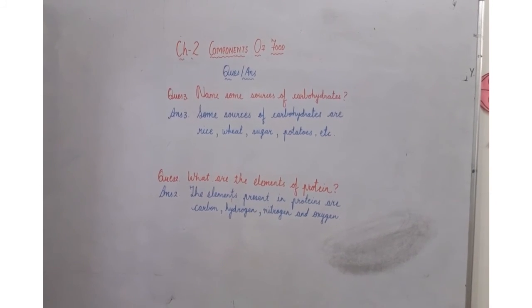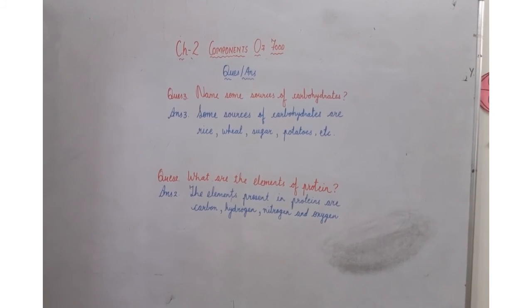Now third one. Name some sources of carbohydrates. So the answer three is some sources of carbohydrates are rice, wheat, sugar, potatoes, etc.